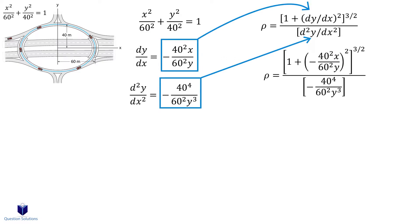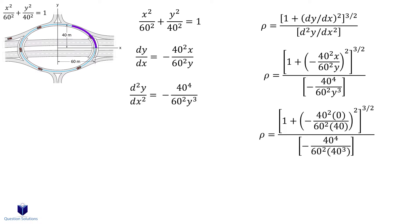Now looking at the image given to us, we see that when x equals 0, y equals 40 meters. Because the least amount of acceleration is felt when the radius is largest. Making x equals 0 in the equation and using 40 meters for y gives us rho is equal to 90 meters.